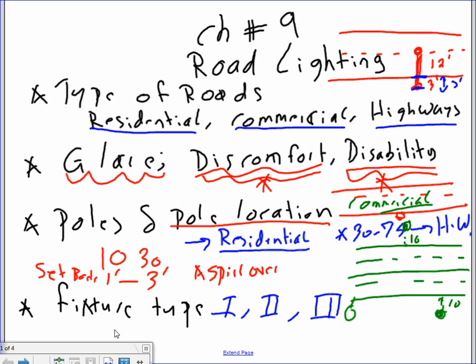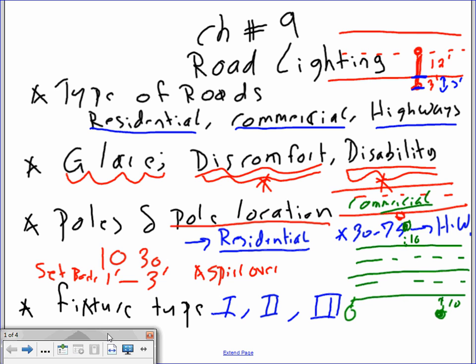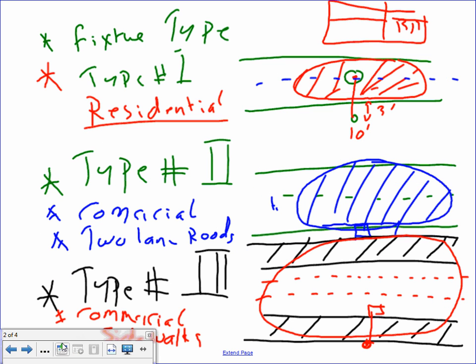Any comments guys about when you are doing highways? Pay attention to the glare. Pay attention to residential, commercial, or highways. Glare - disability, discomfort. Location - sit back one to three feet. Height - 10 to 30 feet or as high as 75 foot. Watts - you can go from 75 watts all the way to 1,000 watts on the highways. Voltages - they burn them from 120 all the way to 600 volts in the highways.